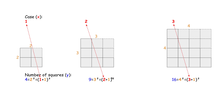For the third case, we get 3 plus 1 as the side length. This is a mathematical pattern. The number of squares equals the case number plus one, all squared. So we arrive at the equation y equals (x + 1) squared.